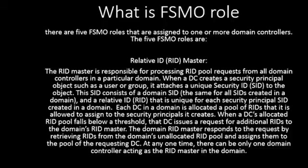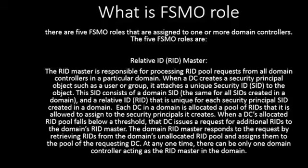Relative ID. The RID master is responsible for processing RID pool requests from all the domain controllers in a particular domain. When a DC creates a security principal object such as a user or group, it attaches a unique security ID to the object. This SID consists of a domain SID, which is the same for all SIDs created in a domain, and a relative ID (RID) that is unique for each security principal SID created in a domain. Each DC in a domain is allocated a pool of RIDs that it is allowed to assign to security principals it creates. When the DC's allocated RID pool falls below a threshold, that DC issues a request for additional RIDs to the domain's RID master.